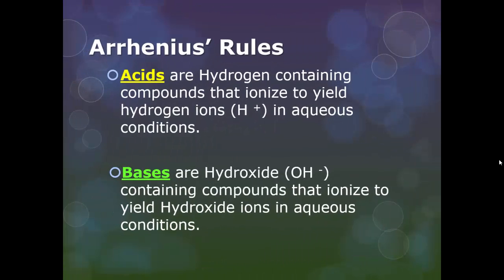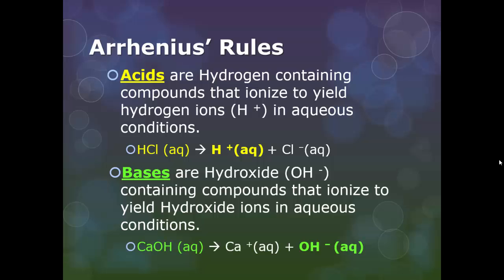So again, acids are hydrogen-containing compounds that ionize and yield that proton. Bases are hydroxide ion containing compounds that ionize to yield the hydroxide ions in aqueous conditions. This seems pretty simple. If you have HCl and it breaks apart, you're going to notice you have that H-plus ion - that's an acid. And if you have calcium hydroxide, you'll notice that you have that OH ion.